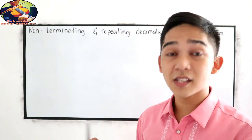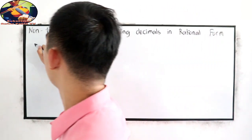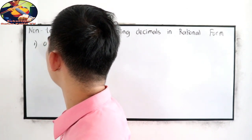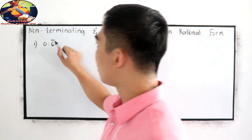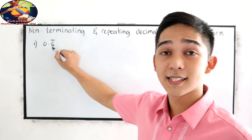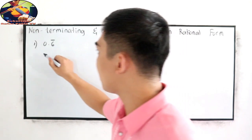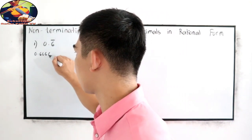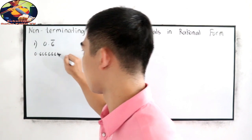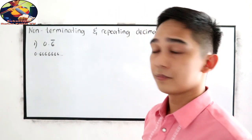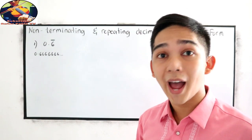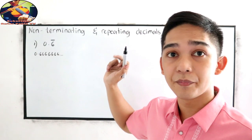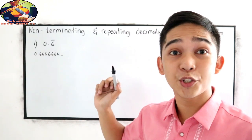Our first example is 0.6 bar. We know that is equivalent to 0.666666 and so on. So how are we going to write 0.6 bar into rational form?